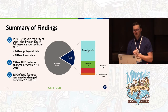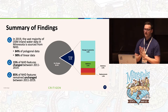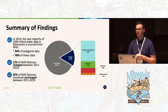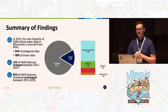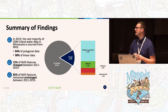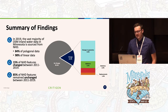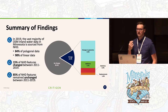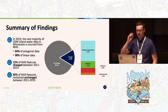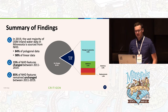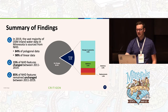To summarize what we found: we realized how big a role NHD plays in inland water features. In Minnesota specifically, NHD represents 84% of polygonal data and 98% of linear data. About 15% of NHD features experienced some sort of change between 2011 and 2019 — changes in geometry, replacements, additions, and deletions — while 85% of NHD features remained unchanged in that time period.